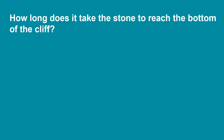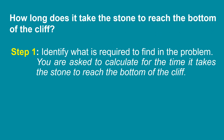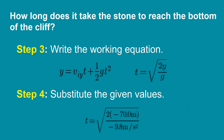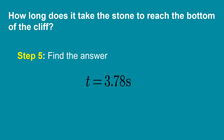To answer the problem, follow these steps. Step 1: Identify what is required — you are asked to calculate the time it takes the stone to reach the bottom of the cliff. Step 2: Identify the given values — initial velocity, height, and acceleration due to gravity. Step 3: Use the working equation y = viy·t + ½gt². From this, derive the formula for time: t = √(2y/g). Substituting the values, t = √(2 × (−70 m) / (−9.8 m/s²)), giving a final answer of t = 3.78 seconds.